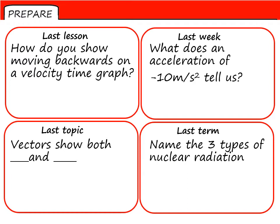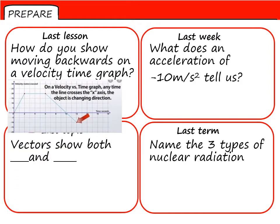Looking at the answers: to show an object reversing, you need to have a line which is beneath the x-axis. So anything above the x-axis is positive on a velocity-time graph, which means you're moving forward. Anything below the x-axis shows a negative speed and therefore reversing.